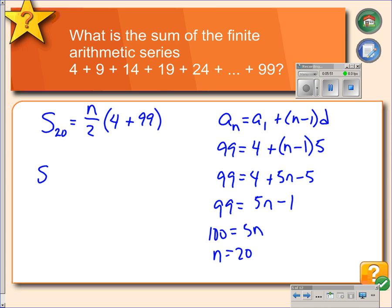So the sum of the 20 terms would be equal to 20 divided by 2 gives us 10 pairs times 4 plus 99. So 4 plus 99 is 103. 103 times 10 is 1,030.